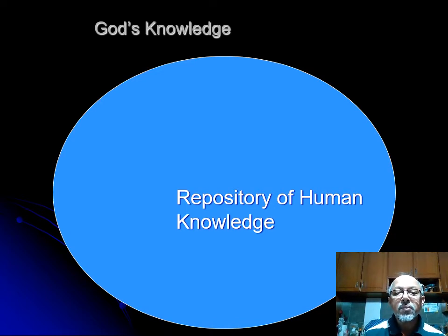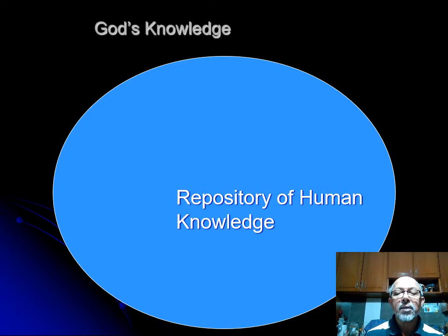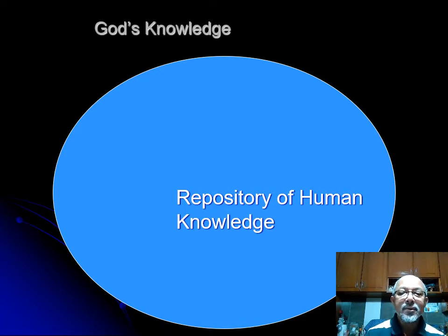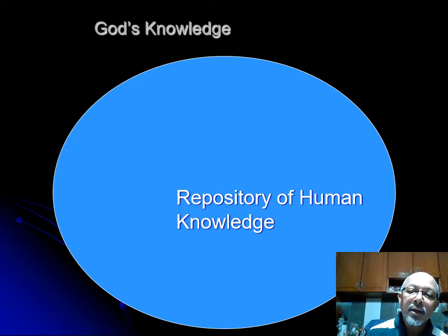The knowledge that humans have gathered so far will be kept somewhere — in books, maybe in journal articles, maybe in newspapers, magazines, digital media, television, films — various kinds of forms by which human knowledge is kept.